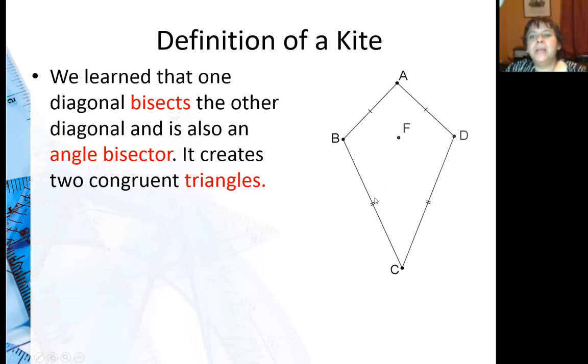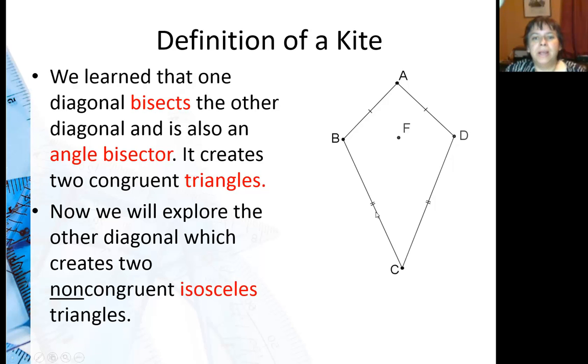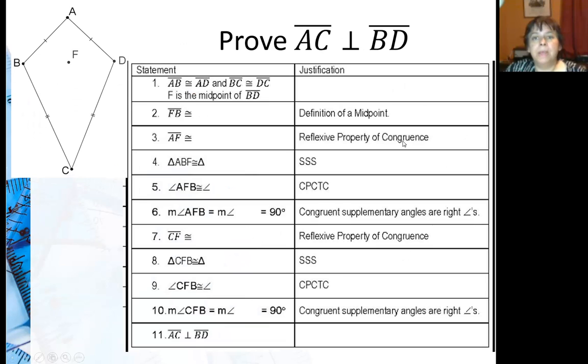It does create two congruent triangles. Now we're going to explore what this diagonal does, the one that connects the two congruent angles. So we do know one thing, it doesn't create congruent triangles. It does create two non-congruent isosceles triangles. So we're going to prove that the two diagonals are actually perpendicular to each other.